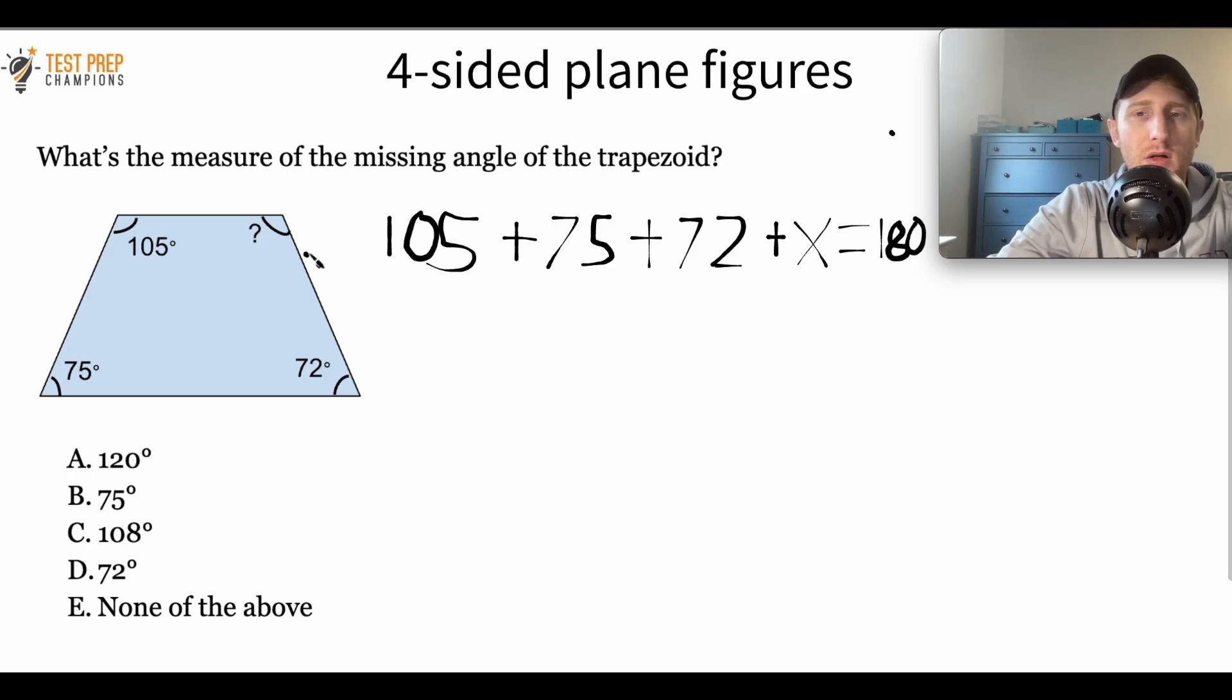But the point here is that this is going to add up to be 360, not 180. Okay, forget that I said 180. I, you know, just had my brain went out to lunch for a second there, but it is 360. So the missing angle here to find it, we want to do 105 plus 75 plus 72 plus X and set it equal to 360.